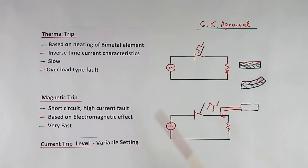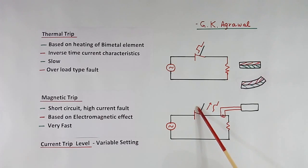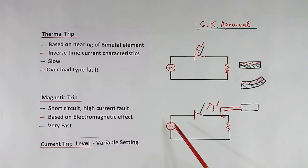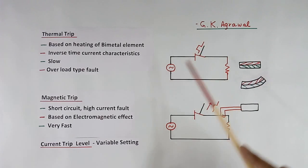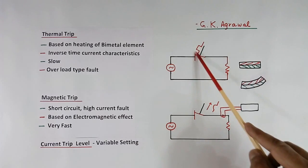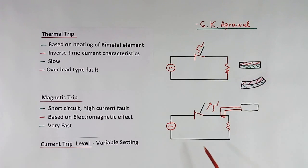Here you can see some symbols: AC, this is MCCB contact, thermal trip, magnetic trip. When we make the drawing of a big system, in the first sheet itself we will show all these symbols and write down what is the meaning of each symbol. So anybody reading the drawing can understand easily without any confusion.